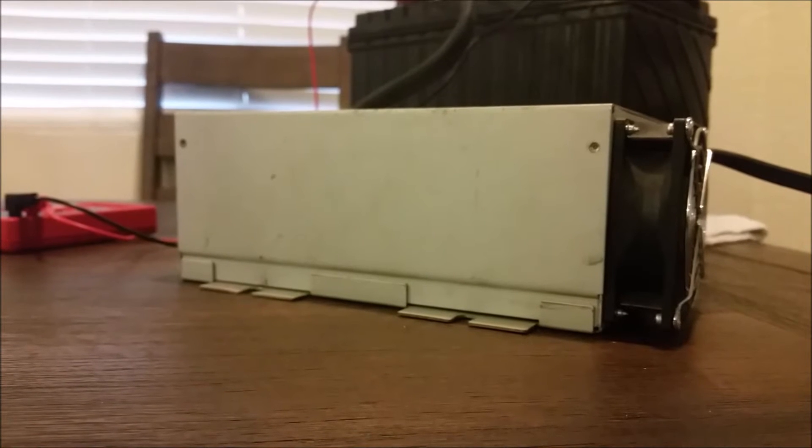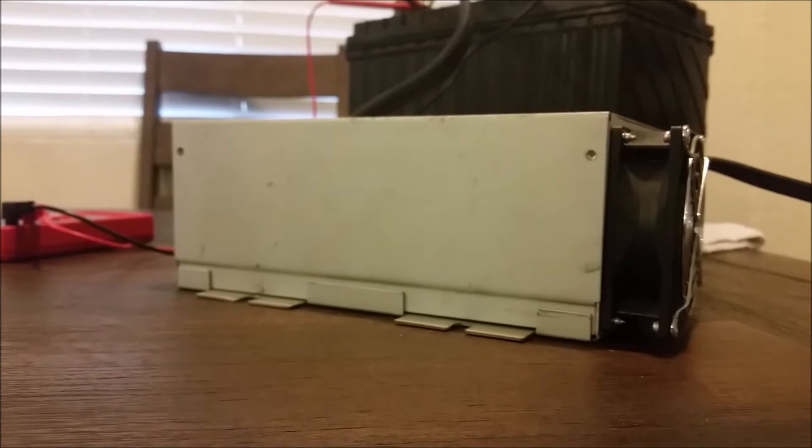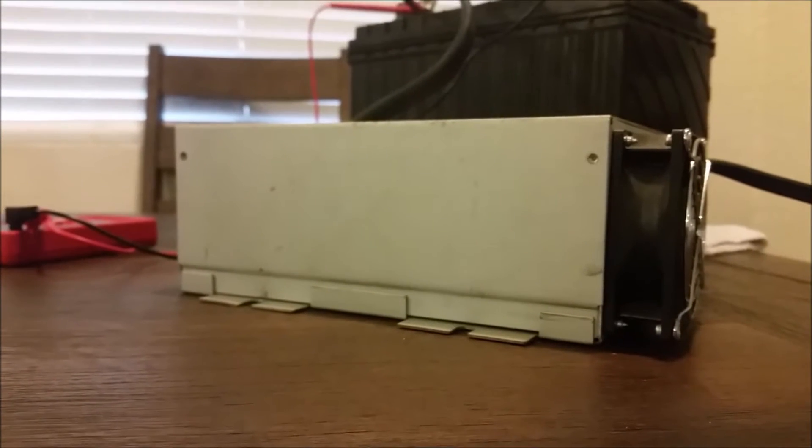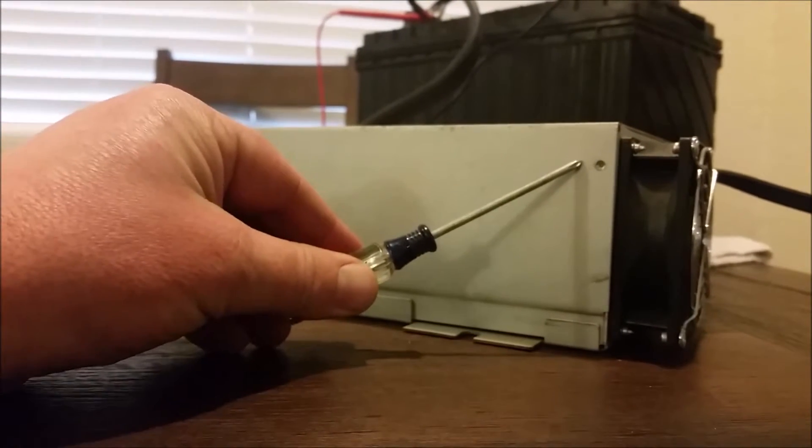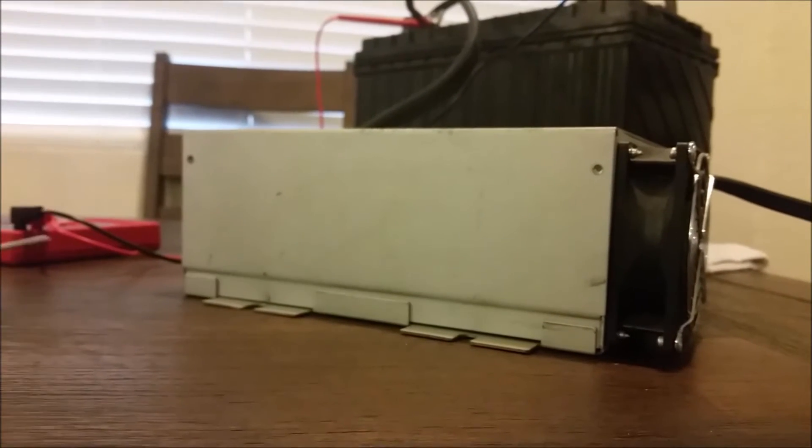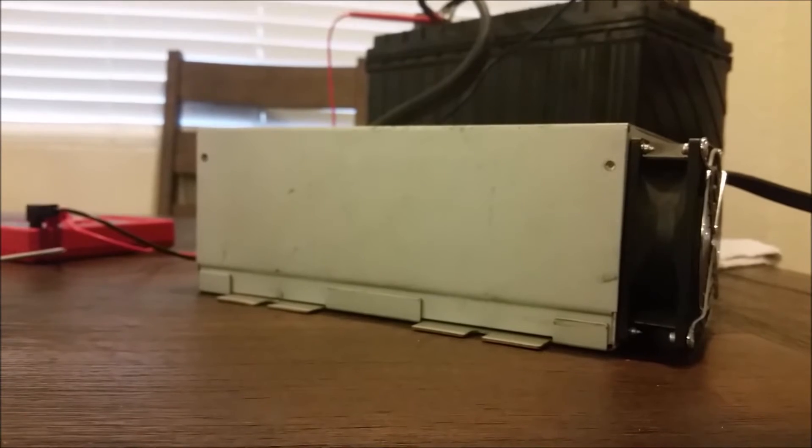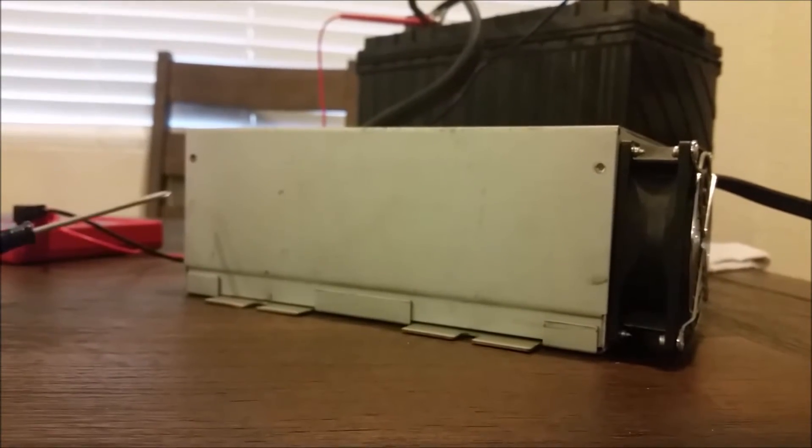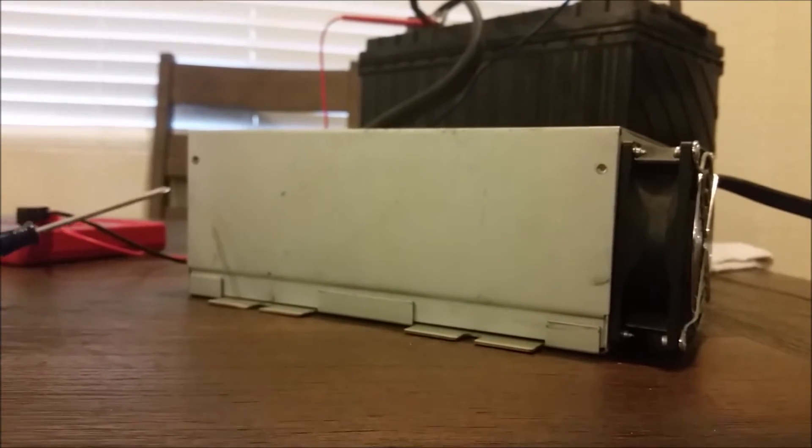Now I'm not going to be able to show you how to drill out the rivets because I did it a few years back when I installed these in my boat. However, they're located here and here and identically on the other side. So once you drill those out, you'd be able to remove the cover.